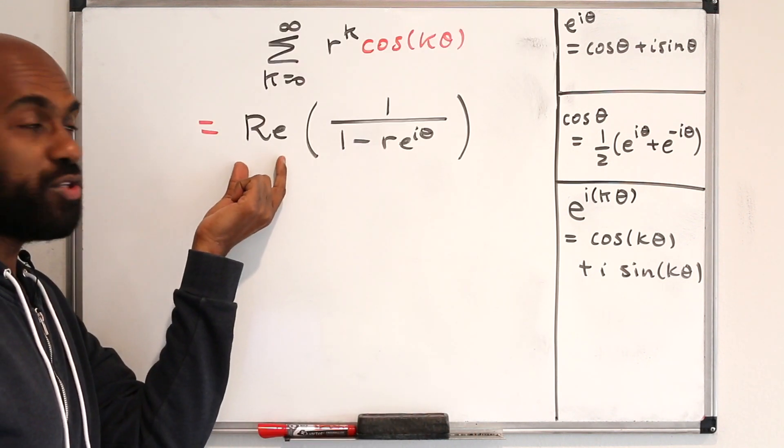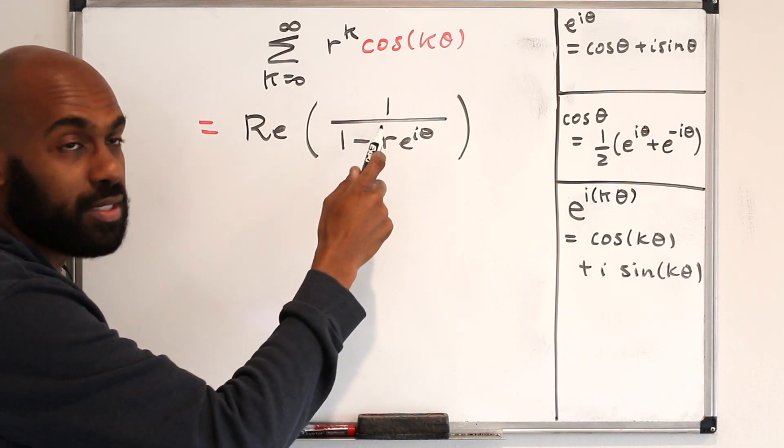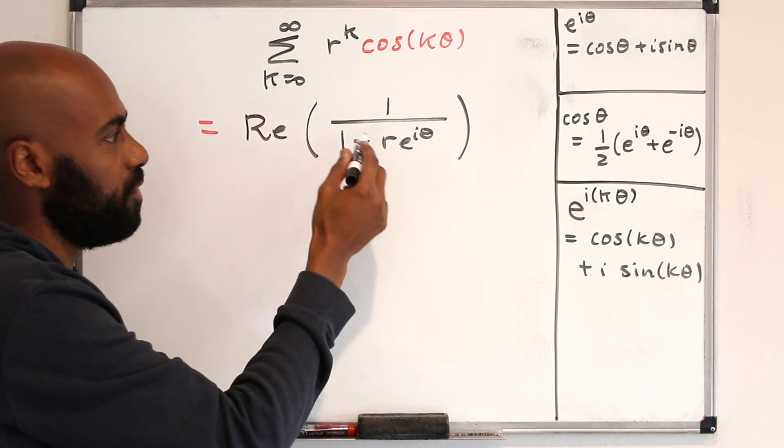So this is a notation usually used for the real part of a complex number. Now the unfortunate part of the way we have this number written is we have the complex part of it in the denominator.